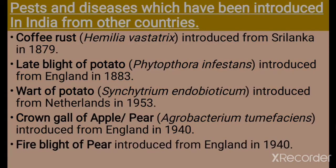Now we will see pests and diseases which have been introduced in India from other countries. Coffee rust, caused by Hemileia vastatrix, was introduced from Sri Lanka in 1879. Late blight of potato, caused by Phytophthora infestans, was introduced from England in 1883.